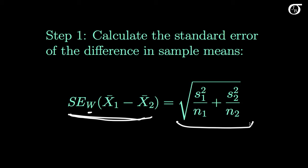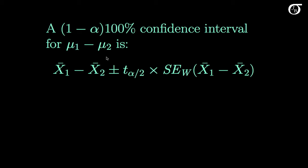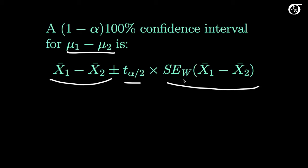The Welch standard error differs from the pooled variance standard error because we haven't pooled the variances together. Often the two standard errors are fairly similar, but sometimes they can differ a great deal. For a confidence interval for mu1 minus mu2, we take the difference in sample means and add and subtract a margin of error, which is a t value times the Welch standard error.